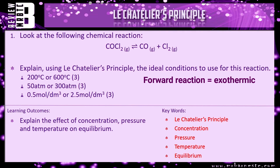The review question: look at the following chemical reaction — COCl2 breaks down into CO plus Cl2, again a reversible reaction. Using Le Chatelier's principle, explain the ideal conditions to use for this reaction. You've got a list to choose from: 200°C or 600°C — low temperature or high temperature, which do you need? The forward reaction here is exothermic. Then 50 atmospheres or 300 atmospheres — low pressure or high pressure — look at the number of molecules on either side. And finally, low concentration or high concentration of COCl2.